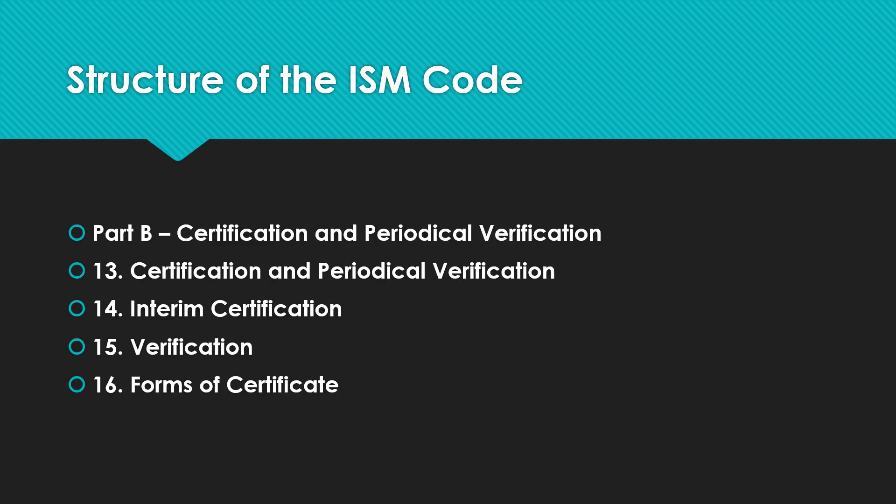Part B of the ISM Code talks about certification and verification. The ship should be operated by a company which has been issued with a Document of Compliance or an interim Document of Compliance. Interim certification may be issued to facilitate initial implementation of the ISM Code when a company has been newly established or when new types of ships are being added to an existing Document of Compliance. All verification should be carried out in accordance with procedures acceptable to the flag state or administration.